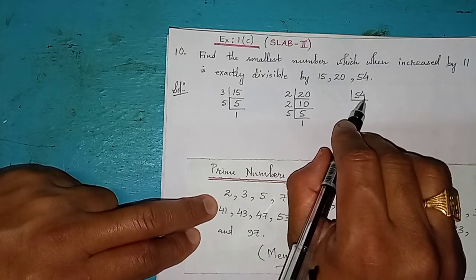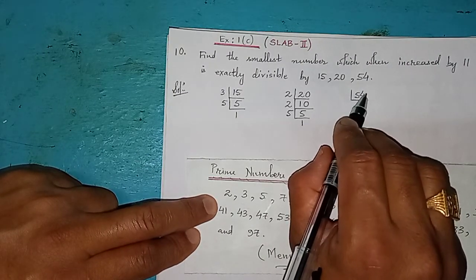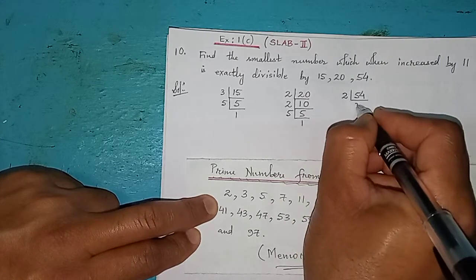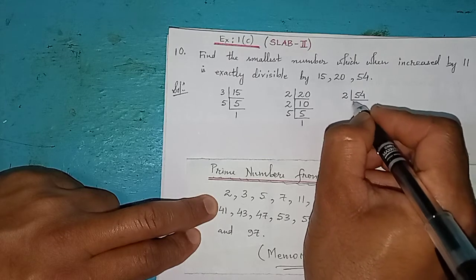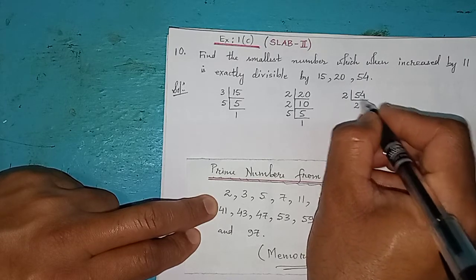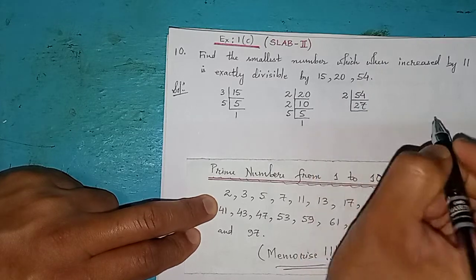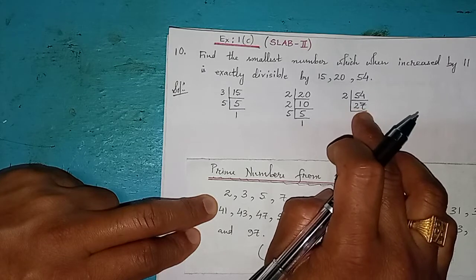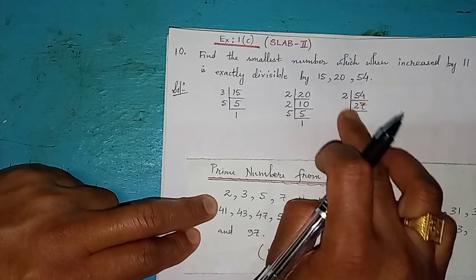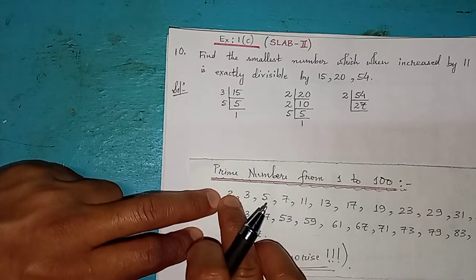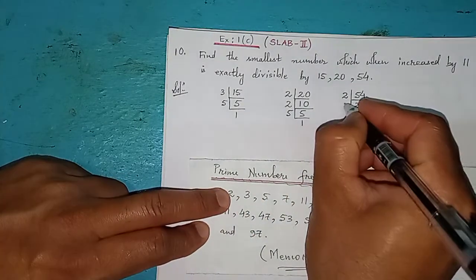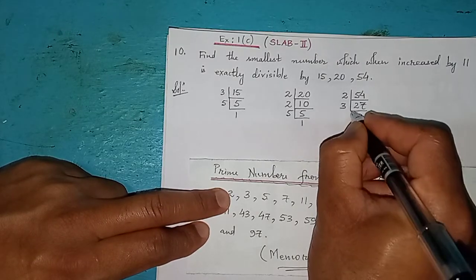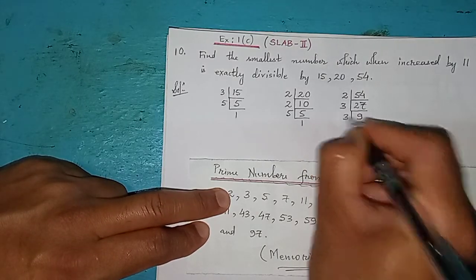Now for 54: the digit 4 is even, so 54 is divisible by 2. We divide: 54 divided by 2 gives 27. Now 27 is an odd number, so we cannot divide by 2. Let's try 3 — and yes, 27 is in the table of 3. Three nines are 27, and again divide by 3: three threes are 9, and 3 is itself a prime number.